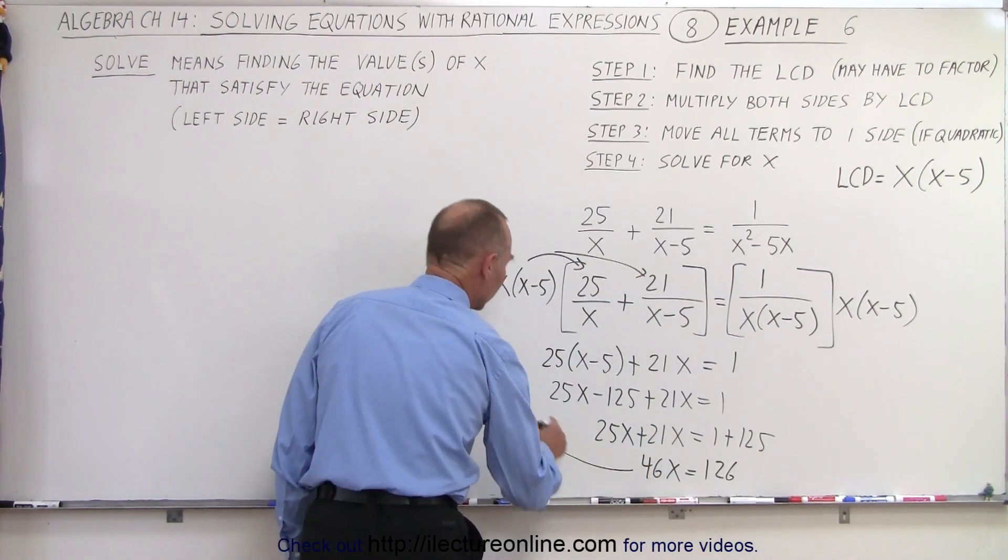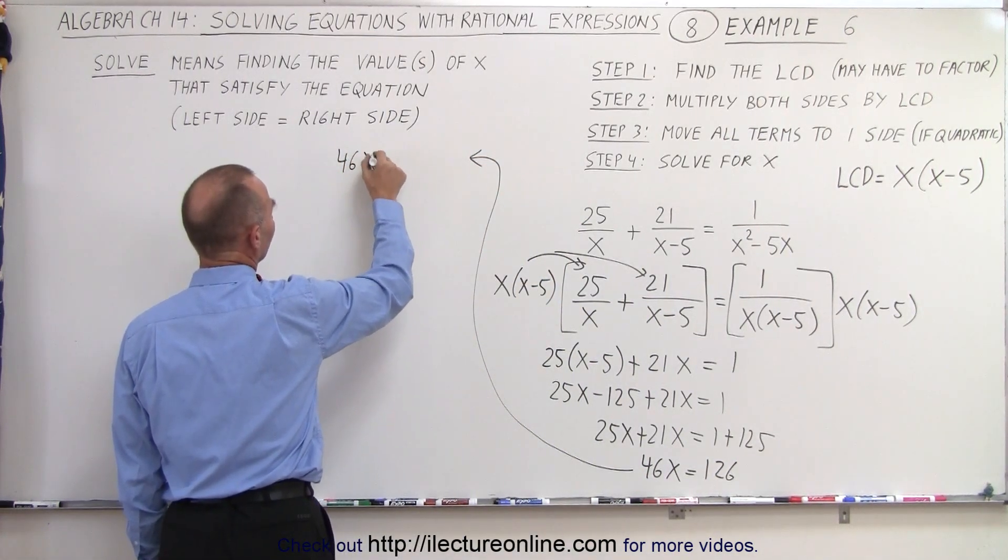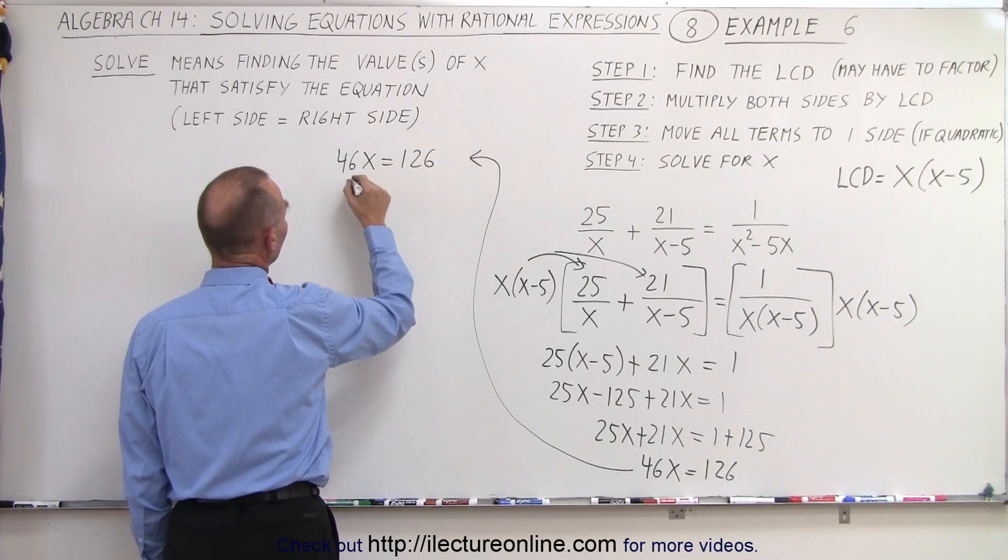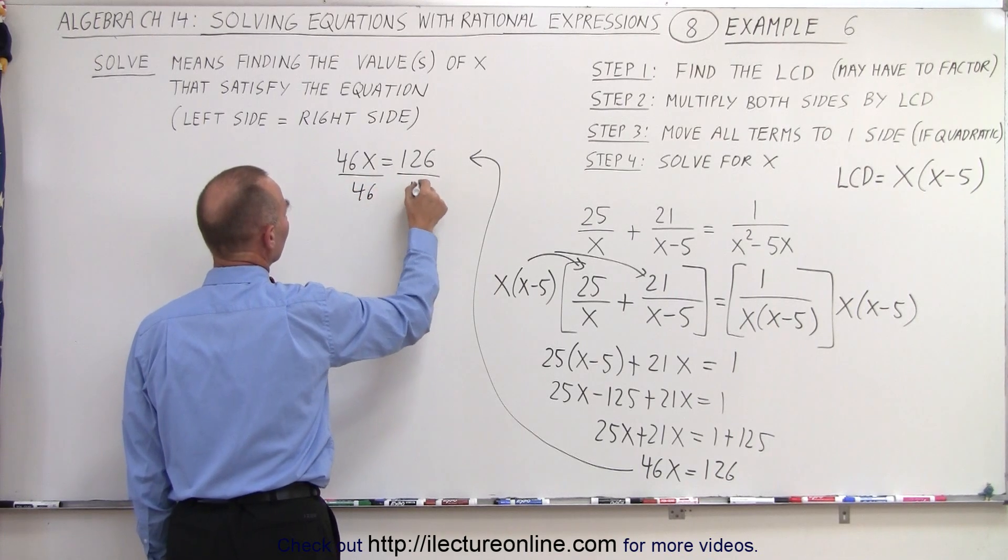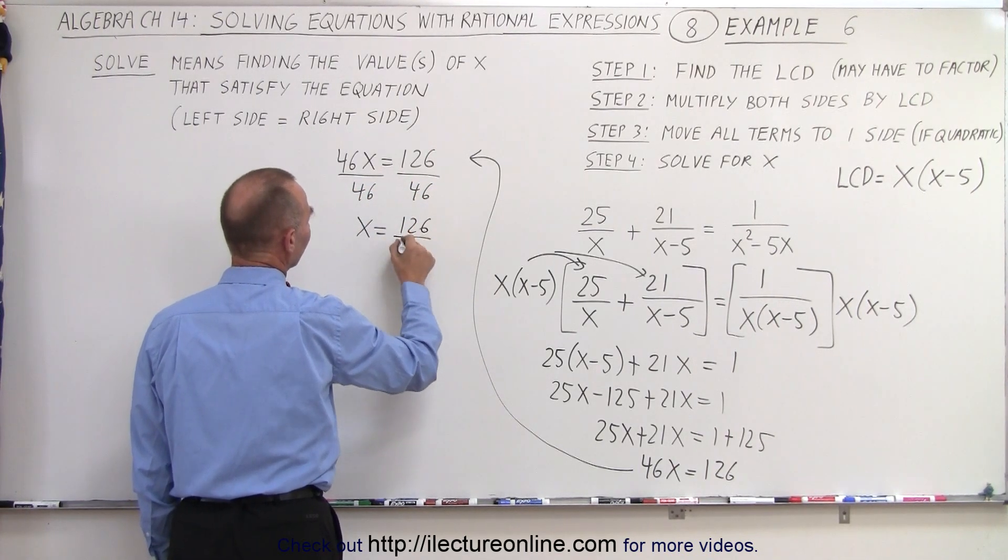And now let's continue over here. So let's rewrite: 46x equals 126. And now we're going to divide both sides of the equation by the numerical coefficient. So we get x is equal to 126 divided by 46.